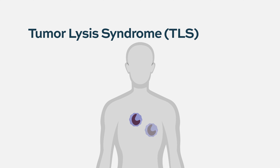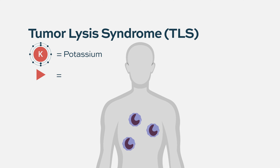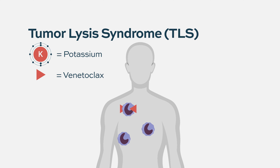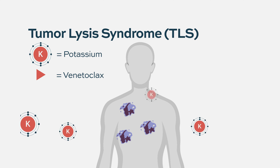What happens is that when the cells burst open, they release a lot of substances — one of them being potassium. When potassium levels are high, that can impair cardiac function and cause arrhythmias, which could be lethal. This became what we call a black box warning for venetoclax, and the initial CLL studies were held for some time until we figured out how to give it safely.